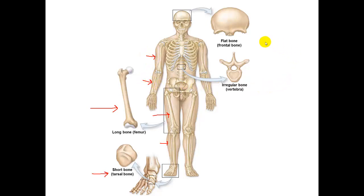Next we have the flat bones. Examples of that would be the bones of the skull and things such as the bones in the ribs. Lastly we have the irregular bones, which are bones that aren't really classified into any particular shape. Examples of these would be the vertebrae that you see within the spine.